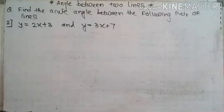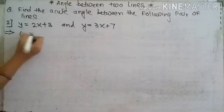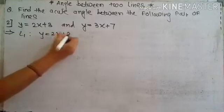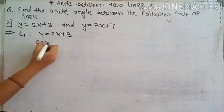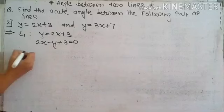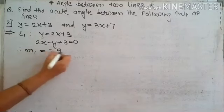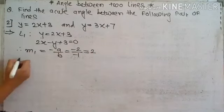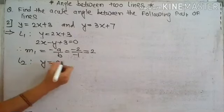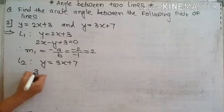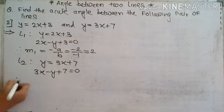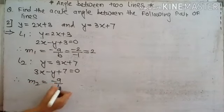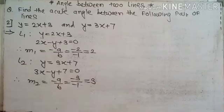Next example: the lines are y equals 2x plus 3 and y equals 3x plus 7. The first line y equals 2x plus 3 can be written as 2x minus y plus 3 equal to 0. Therefore slope M1 equals minus A upon B, that is minus 2 upon minus 1, equals 2. The second line y equals 3x plus 7 becomes 3x minus y plus 7 equal to 0. Therefore M2 equals minus 3 upon minus 1, equals 3.